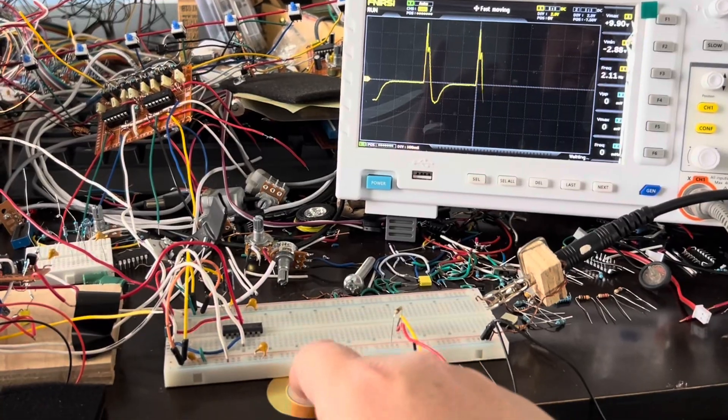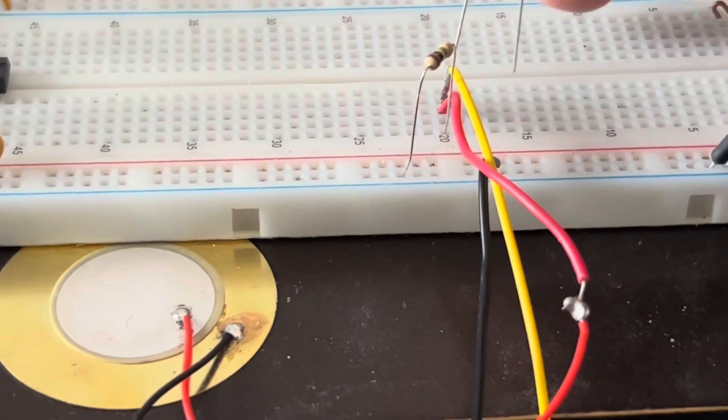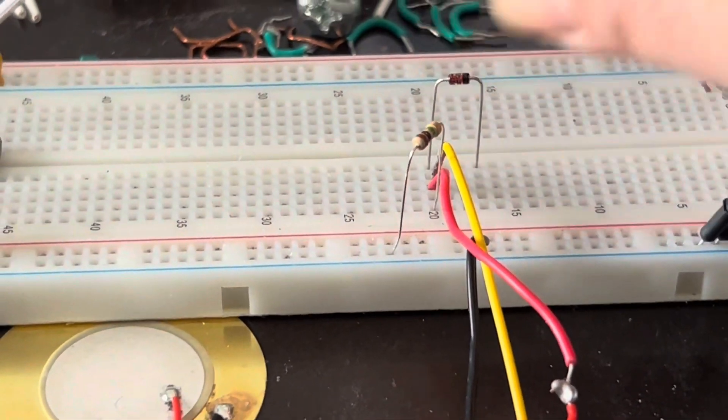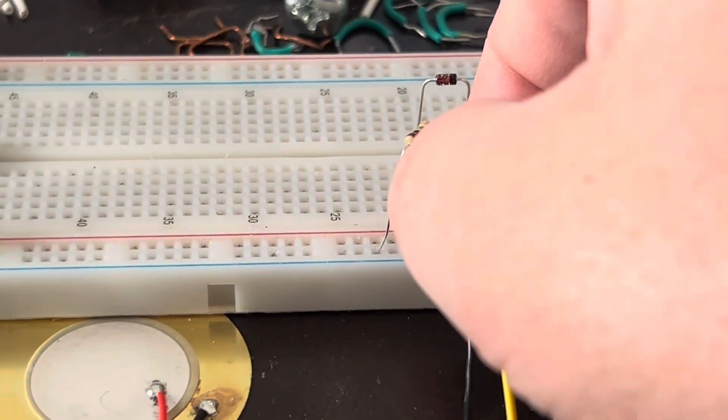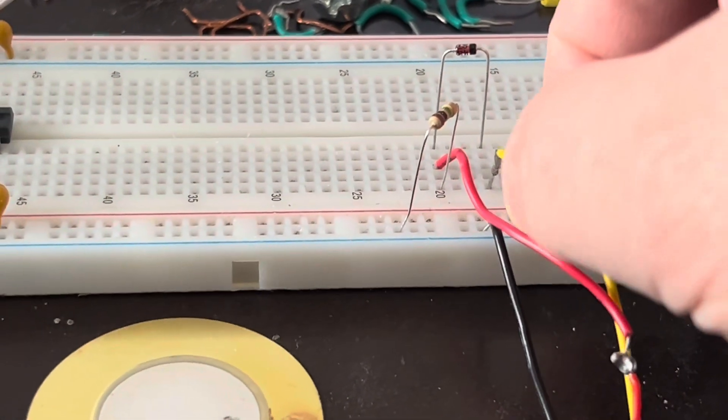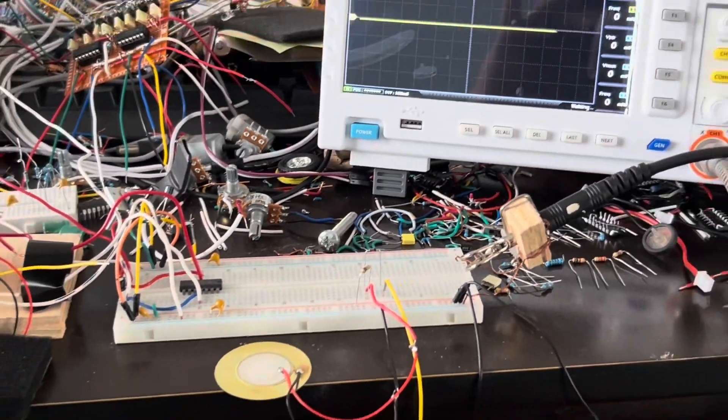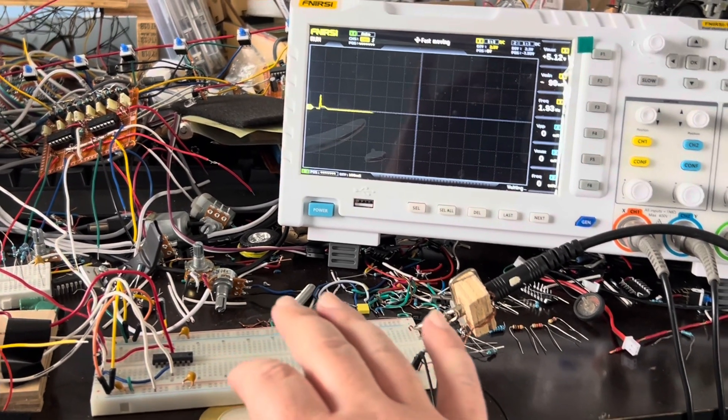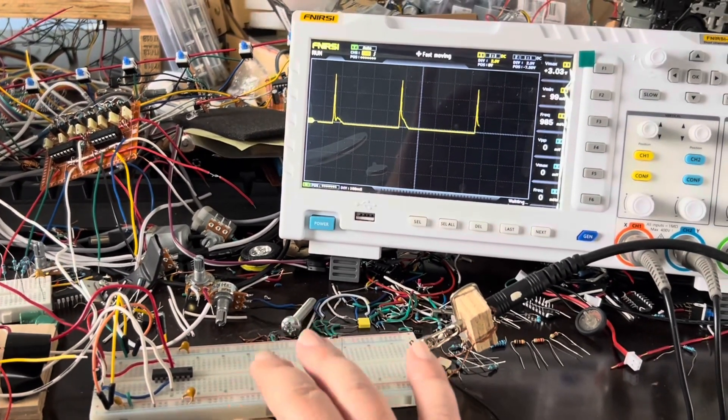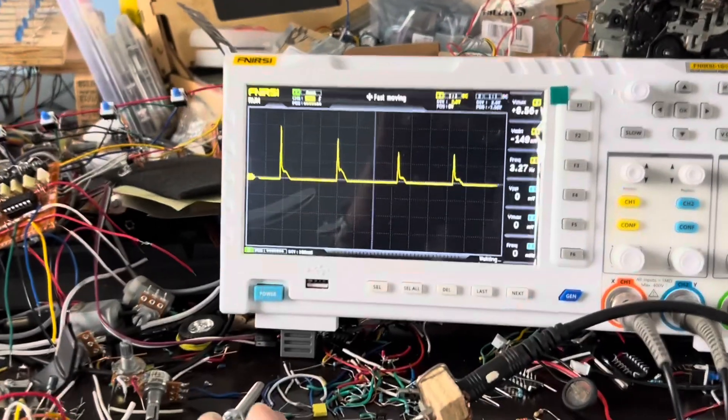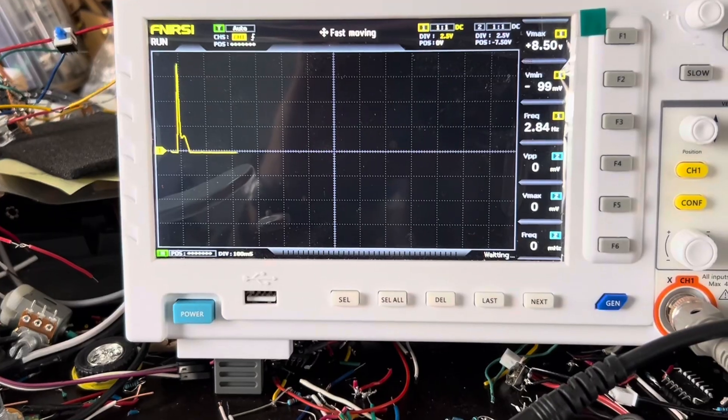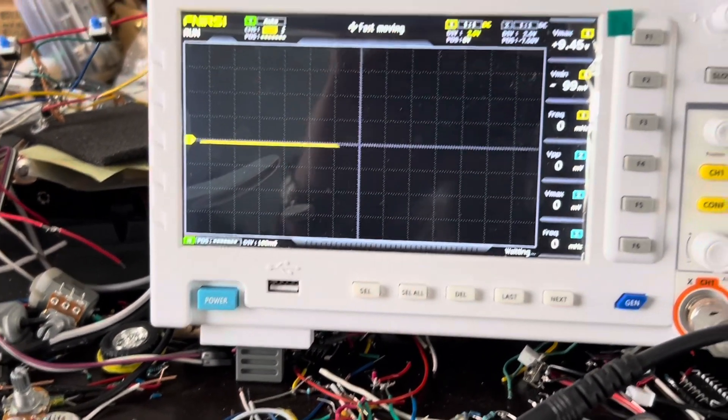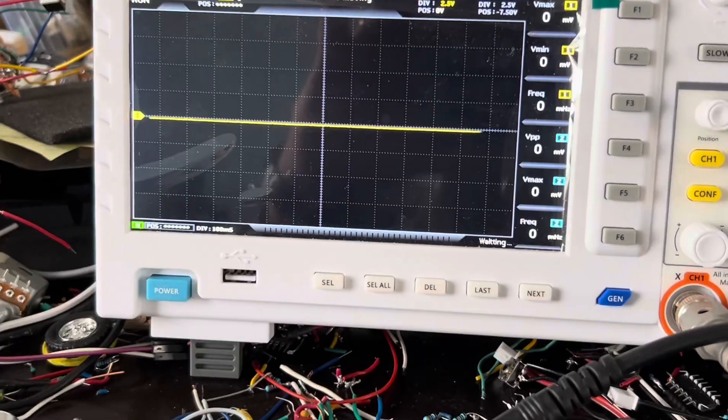So let's get rid of that negative spike by putting a diode here. Let's get this diode in this spot and let's take the oscilloscope probe and measure it. But you notice that there's a big voltage drop across that diode.